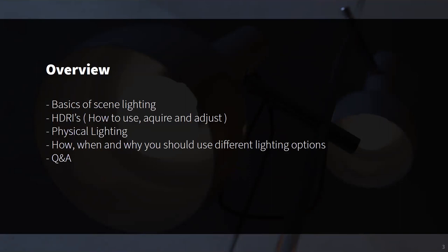In today's lighting essentials session, I'll be covering the basics of lighting in general and an overview of all the tools and ways you can use lighting to create more dynamic scenes in Keyshot. We'll use, acquire, and adjust HDRI environments, and discuss the different types of physical light profiles available in-program. I'll also talk about how, when, and why you should use different lighting options, how to create custom presets, and how to import third-party HDRIs. Periodically I'll jump in with a few demos — there are also scenes available for download on our website next to this session.